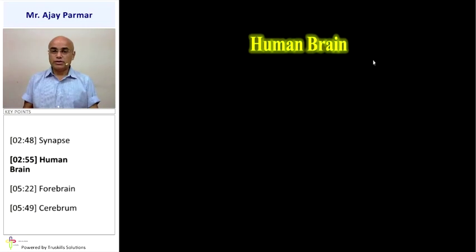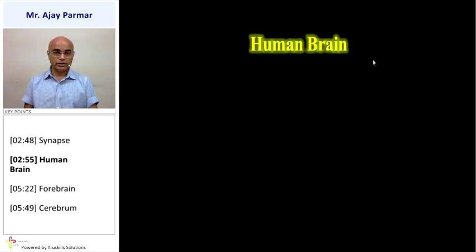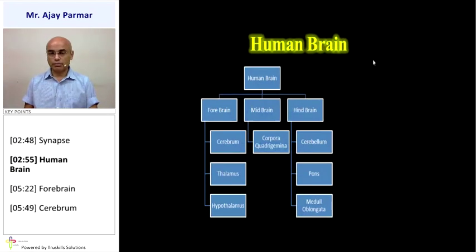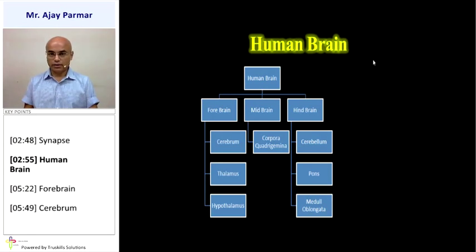When we study the human brain, we classify it into mainly three parts: number one, the forebrain; number two, the midbrain; and number three, the hindbrain.